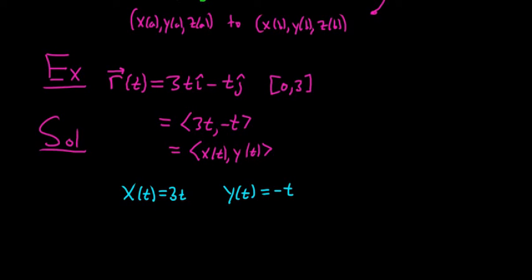So the formula says it's going to be the integral from a to b. So here, this is your a and this is your b. So it's 0 to 3. And it's the square root of, in this case, it's just two components. So it's x prime of t squared plus y prime of t squared, dt.